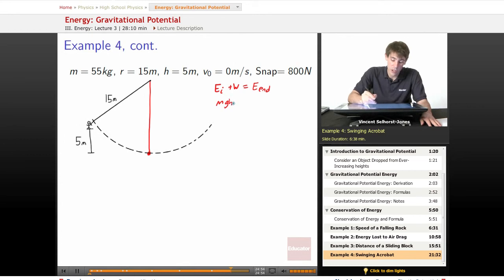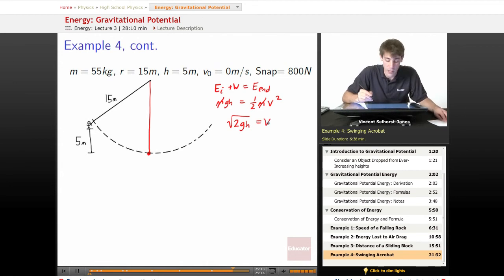All of the energy initial is going to be transferred into energy at the end. So energy initial is mgh equals one-half mv squared. Our m's cancel out, so we don't have to worry about the mass. So gh equals one-half v squared. So we've got the square root of two gh equals v. We plug in our numbers, and we get that v at the bottom is equal to 9.9 meters per second.